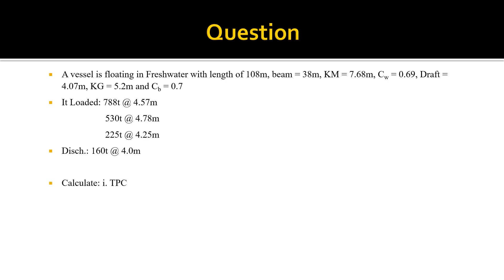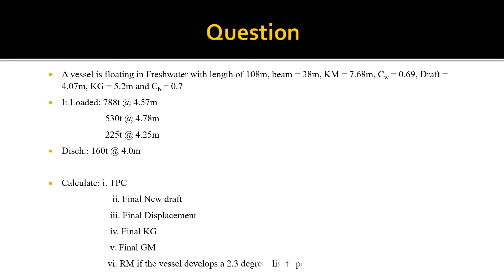We need to calculate the following: 1. TPC; 2. the new draft; 3. the final displacement; 4. final KG; 5. final GM; and 6. the RM if the vessel develops a 2.3 degree list to the port side.